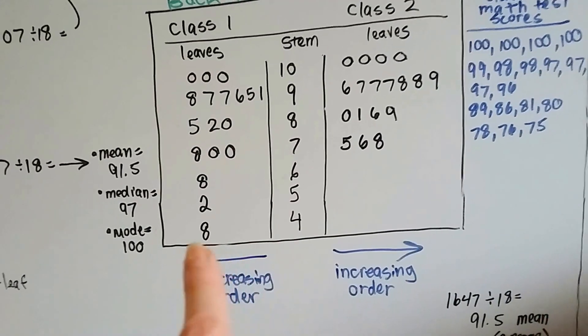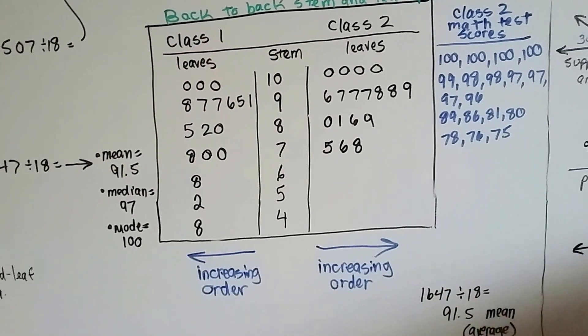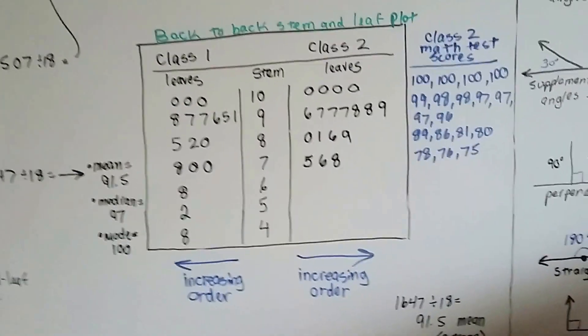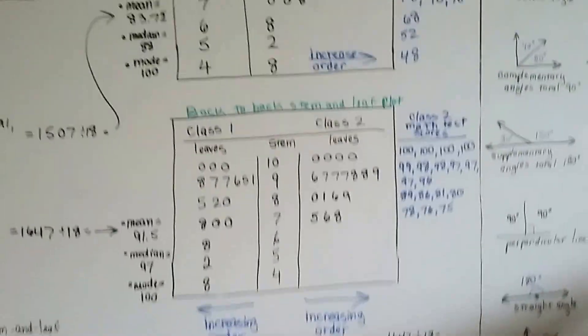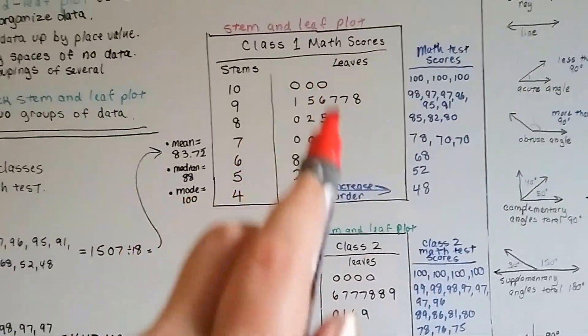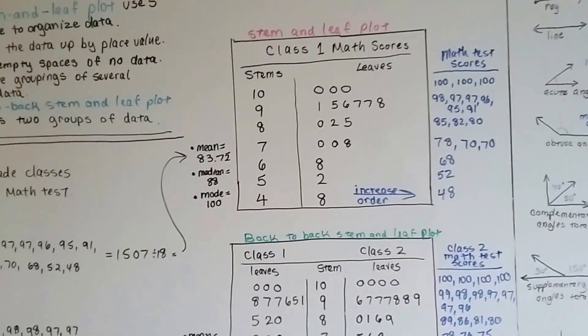So it goes in increasing order to the left for this side and in increasing order to the right for that side. It's the back-to-back stem and leaf plot. So the regular stem and leaf plot is just like this, and it helps you look at data overall,